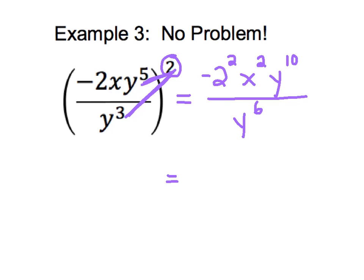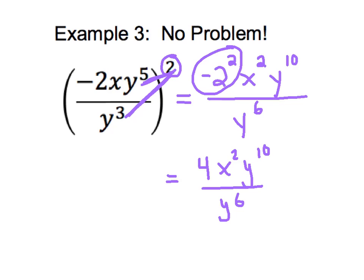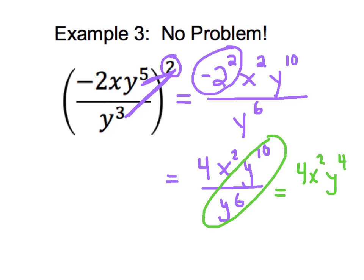Numerically, I can solve negative two squared. Negative two squared means negative two times negative two, which will give me a positive four x squared y to the tenth over y to the sixth. Last but not least, I notice that I have y's in both the numerator and the denominator. So I can now apply my quotient rule and subtract my exponents because both of my base numbers are y. That will give me four x squared y to the fourth over one, or just four x squared y to the fourth.